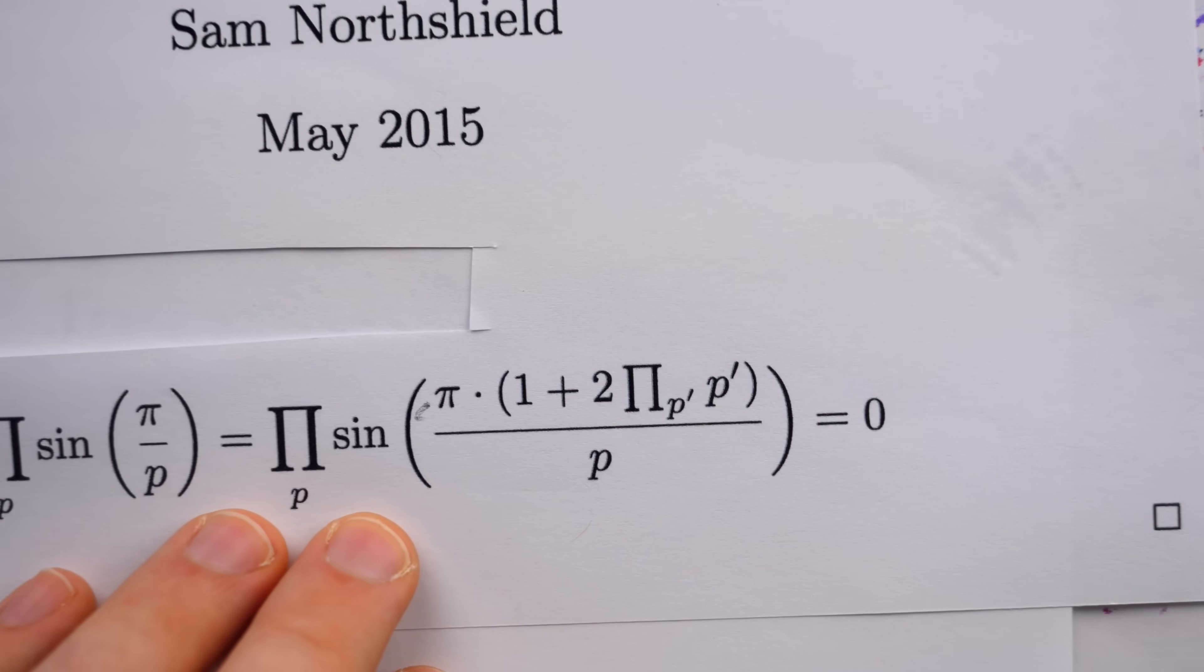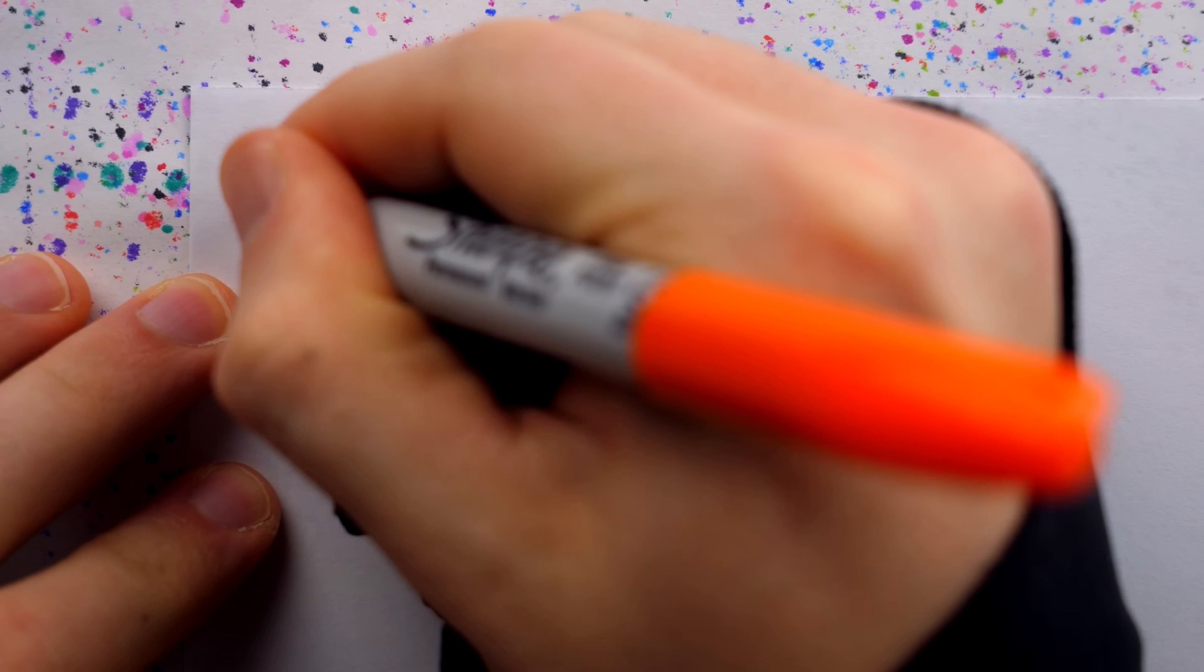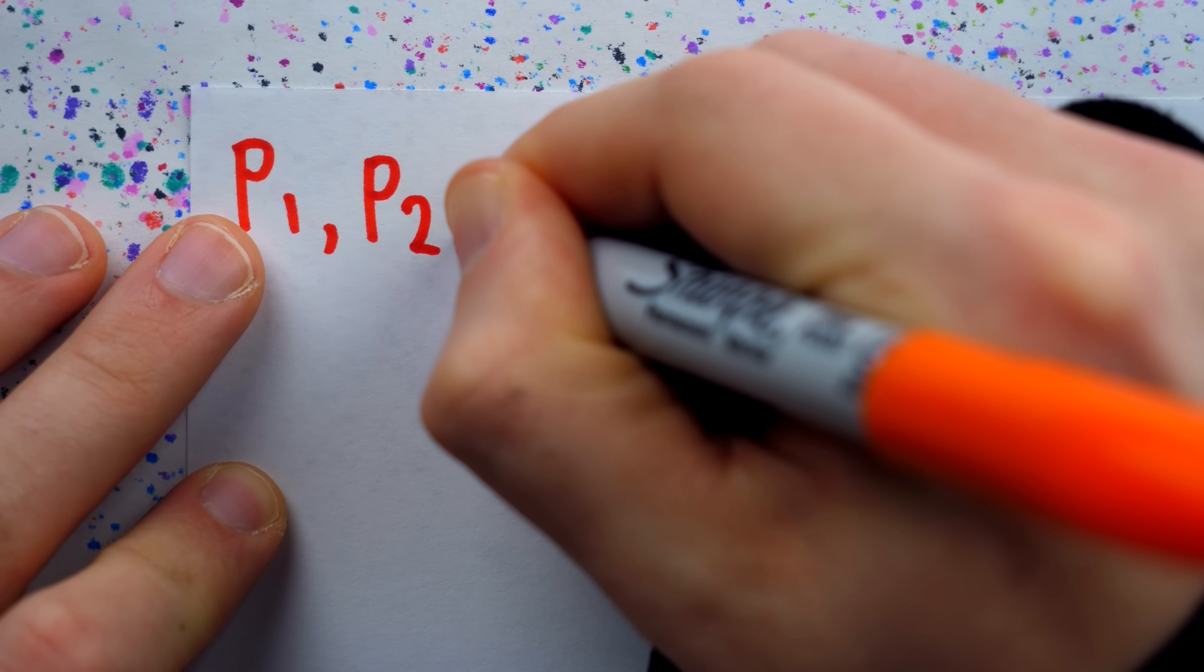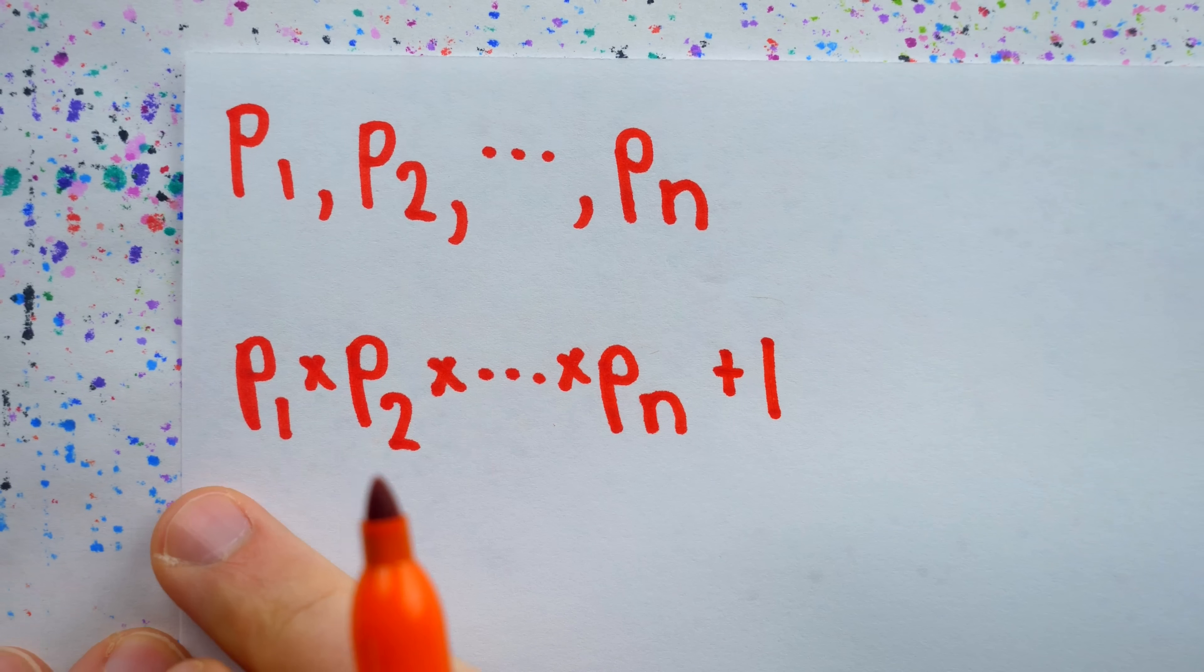The classic proof says: take any finite list of primes, multiply them all together, add one. This number then certainly can't have any of these primes as a factor, and so this list can't be complete.